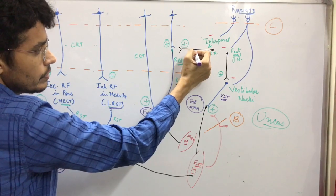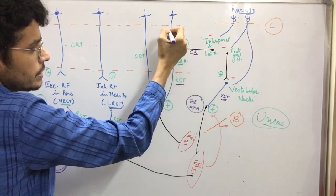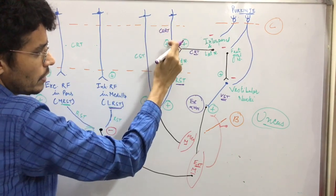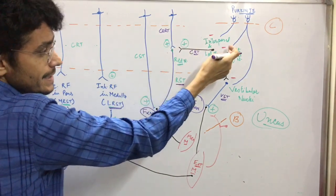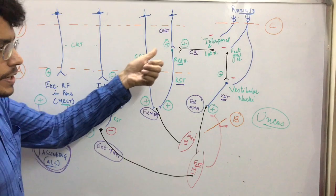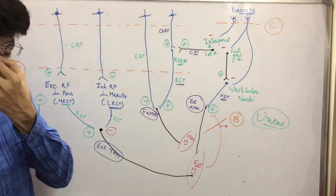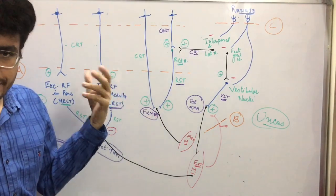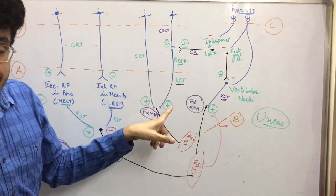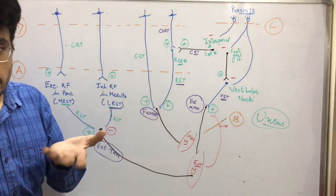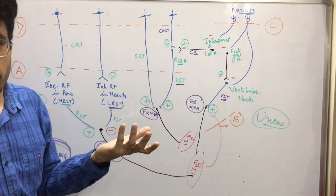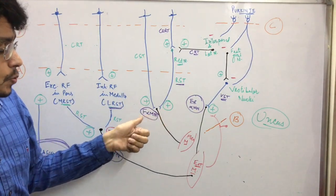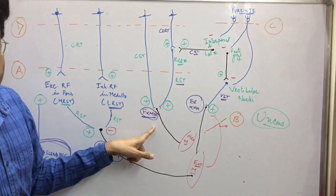The tract from the cerebellum to the red nucleus is called the cerebellorubral tract, and the one from the cerebral cortex is called the cerebrorubral tract. Both are excitatory to the red nucleus. The red nucleus is not very much developed in humans — it is less developed and extends only up to the upper C3 or C4 cervical level, upper thorax. It is excitatory to the alpha motor neurons of the flexor muscles.